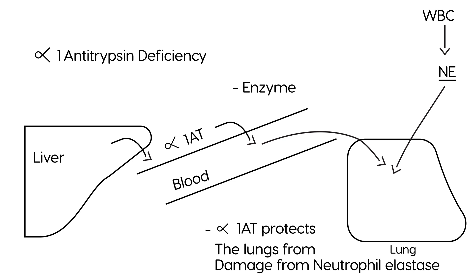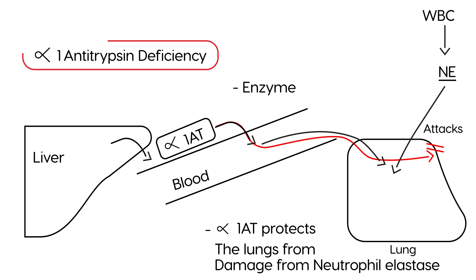Neutrophil elastase attacks the lung, and what alpha-1 antitrypsin does is prevent that from happening. So you want alpha-1 antitrypsin — it's an enzyme that protects the lung from damage caused by neutrophil elastase, which is a protease produced by white blood cells.